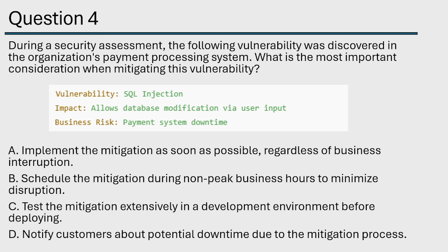It's really going to be between B and C, since we already ruled out A and D. What is the most important consideration when mitigating this vulnerability? If you said B — schedule the mitigation during non-peak business hours — you're incorrect. It is C. We're going to test that mitigation extensively. Why? Because we need to make sure that it doesn't cause more harm than good. Then we'll deploy it. We don't throw things into our environment just because somebody says it's a mitigation — we need to test it first. That's the most important consideration when mitigating this vulnerability. Definitely C.